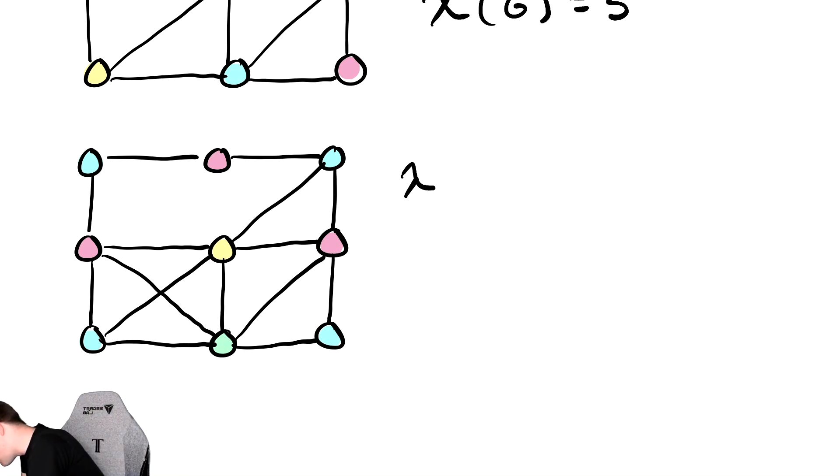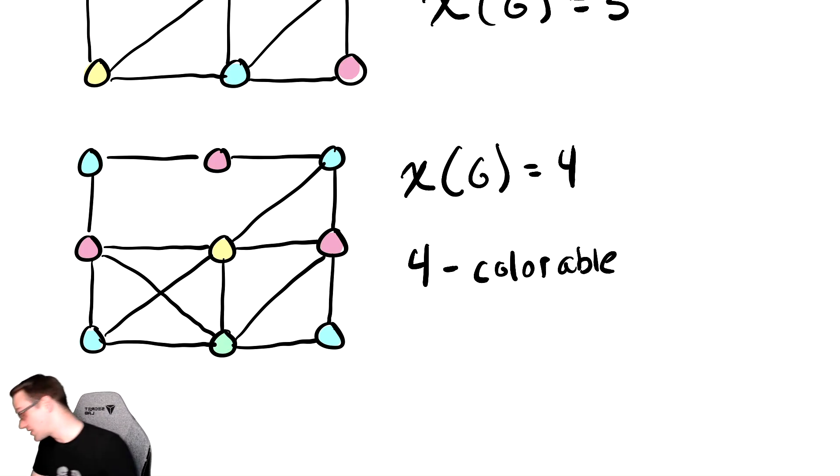So the chromatic number of this graph is four. It is four colorable. It turns out it's also five colorable and six colorable and seven colorable and eight colorable and nine colorable. Not anything more because there's only nine vertices. I can't possibly color them more than nine. But you can color something with more colors than you need. But the question is, how small can you make that? And that turns out to be a very difficult question to answer.